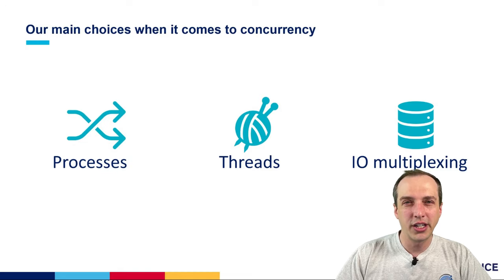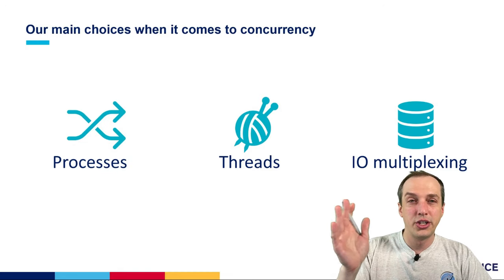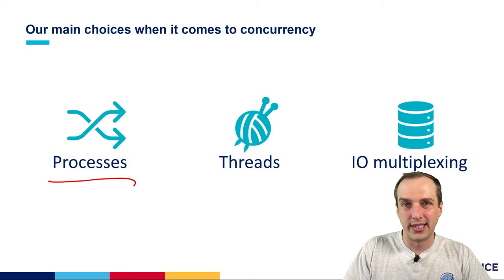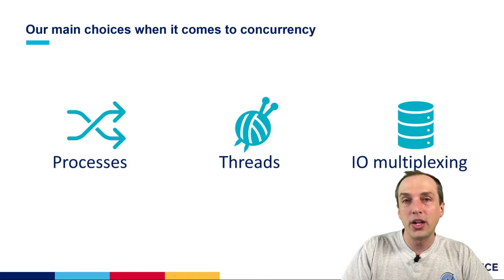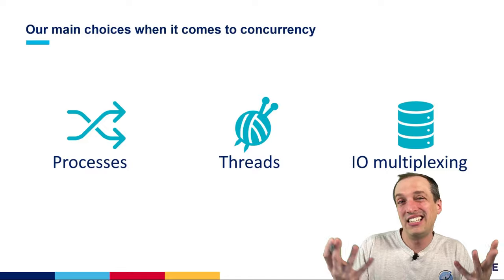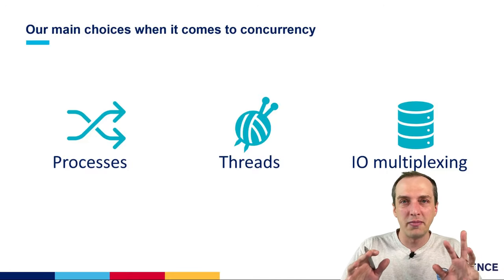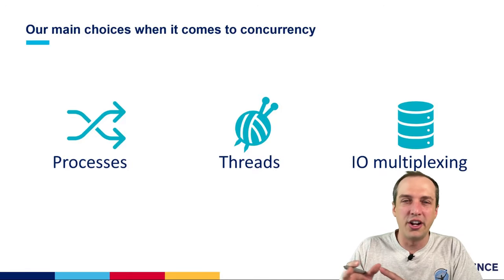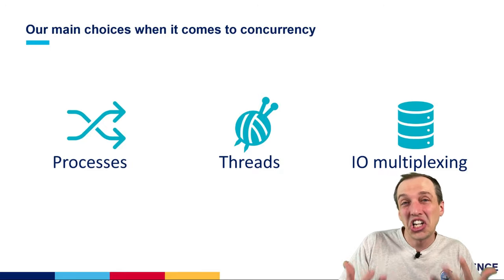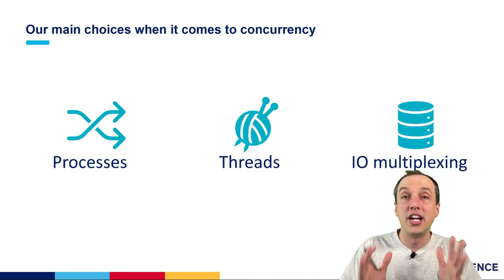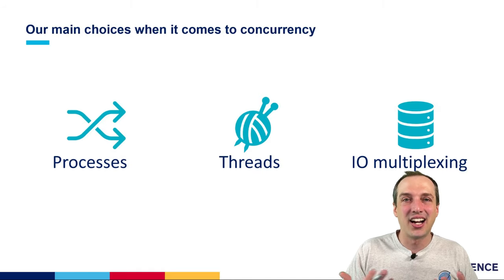The three main choices we have when it comes to concurrency are to use processes, to use threads, or to use IO multiplexing. We've already been doing a lot with processes — we've used fork, posix_spawn, and execv. That's really good for creating a completely different unit of computation that in many cases, like with a shell, is completely separate from the other task you're doing. Running a bash shell is very different from running a code editor or GCC, but that is concurrency. Almost always none of those different processes have anything to do with each other.